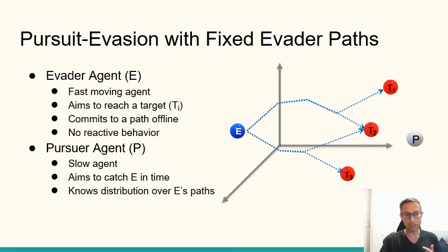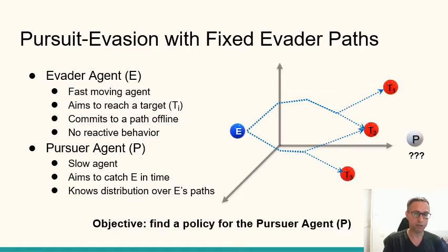On the other hand, the pursuer knows the distribution over which path the evader would choose, and can also watch the evader and react over time. And the task we are dealing with is how to find a policy for the pursuer agent.